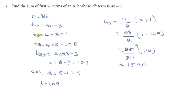First, substitute n = 1: 4 into 1 minus 3 gives 4 - 3 = 1. Then substitute n = 2: 4 into 2 gives 8, and 8 - 3 = 5.